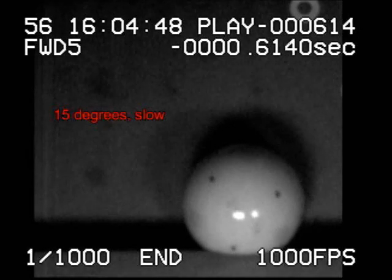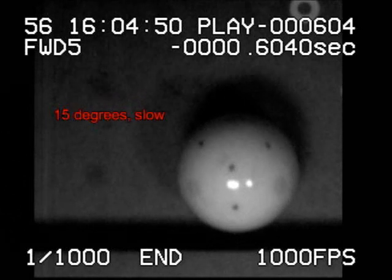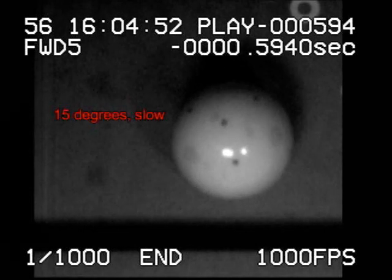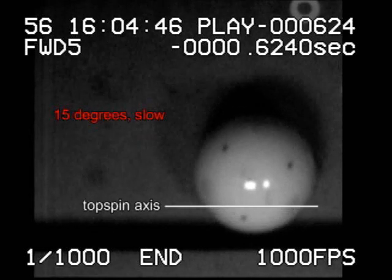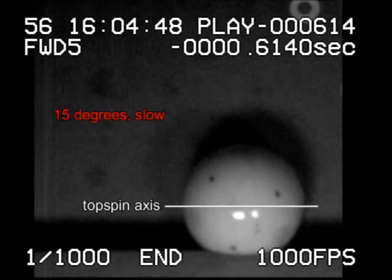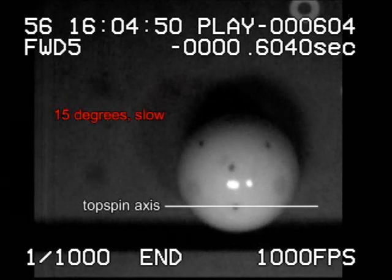Notice how the ball picks up top and counterclockwise spin after rebound. The topspin is about an axis parallel to the cushion, which causes the rebound path to curve slightly to the short side.